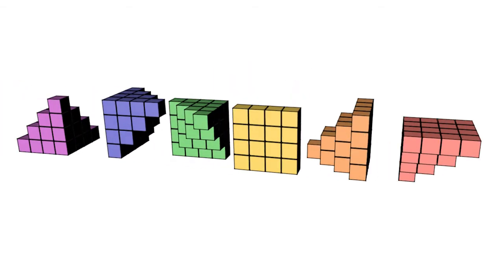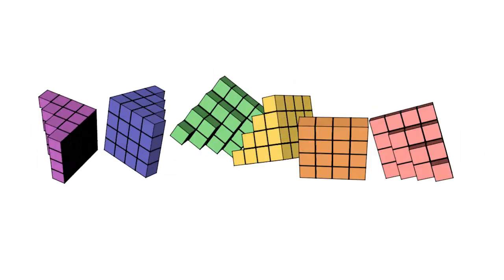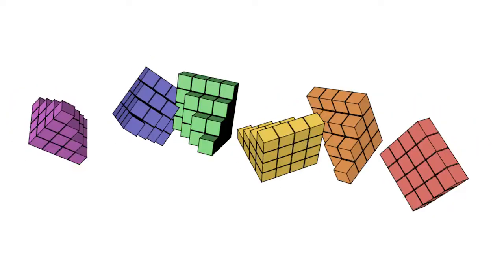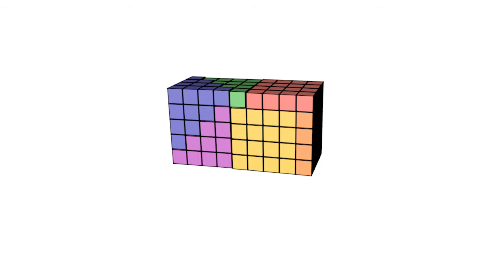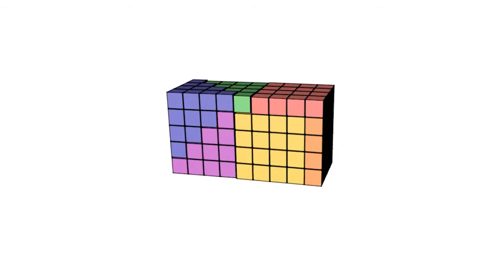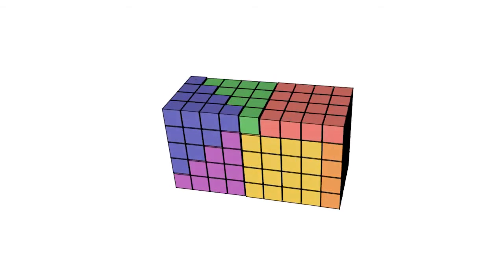Let's use the six colors of the rainbow to distinguish them. Now we need to try to put these six together. We can form a rectangular prism from these six pieces.